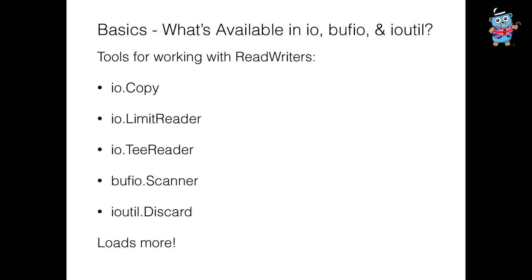Some of the tools we have for working with them include io.Copy, LimitReader, TeeReader, bufio.Scanner, Discard, and there's loads more in the standard library. They're all over the place once you see them. There's a very good analogy to Unix pipes — things like cat, head, tail, tee, all that.